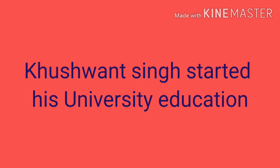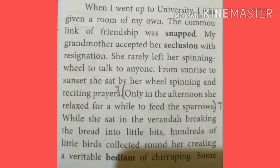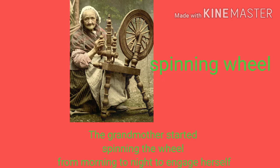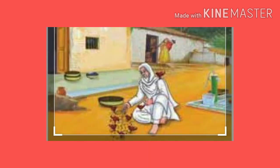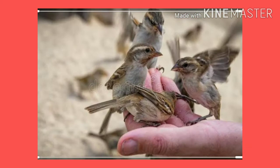When Khushwant Singh went to university for higher studies, he was given a room of his own, and the common link of friendship between him and his grandmother was further damaged. His grandmother started to spin the wheel from sunrise to sunset to keep herself engaged. Only in the afternoon would she relax for a while to feed the sparrows. The sparrows came and sat on her legs, on her shoulders, and some even sat on her head. She smiled but never shooed them away. It used to be the happiest half hour of the day for her.